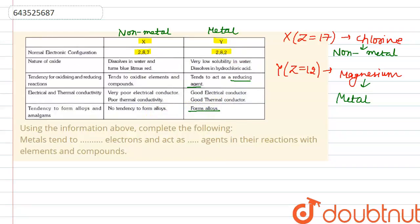Now let's come to the given question. It says, using the information above, complete the following: Metals tend to blank electrons and act as blank agent in their reaction with the elements and compounds. So generally, the metals tend to donate the electron.